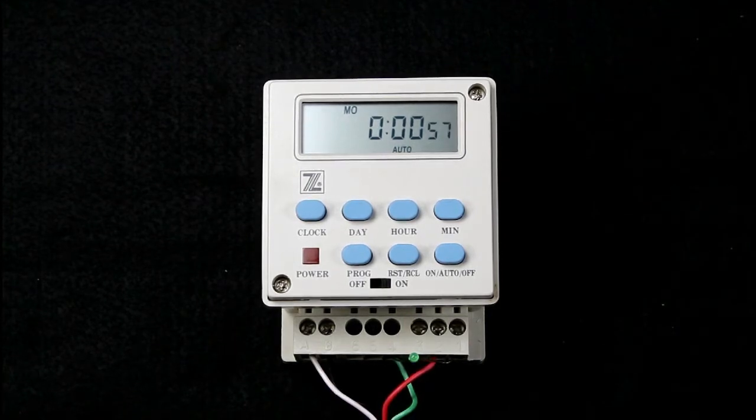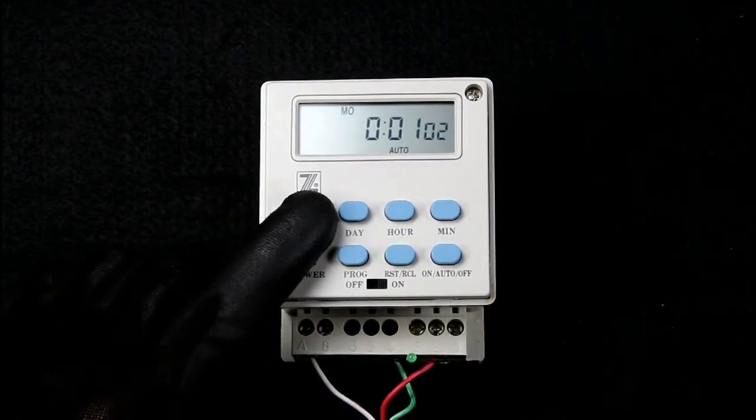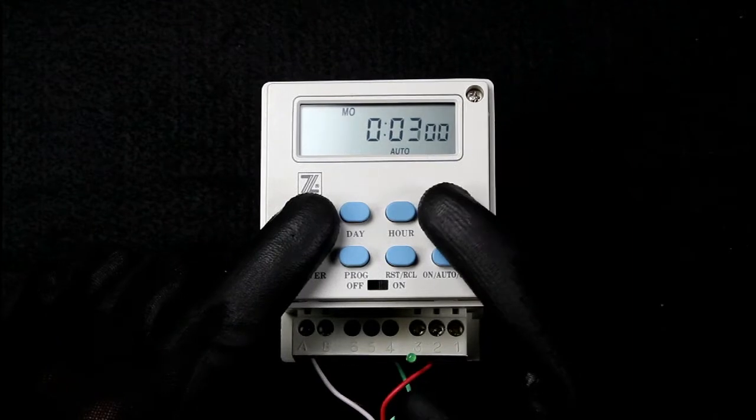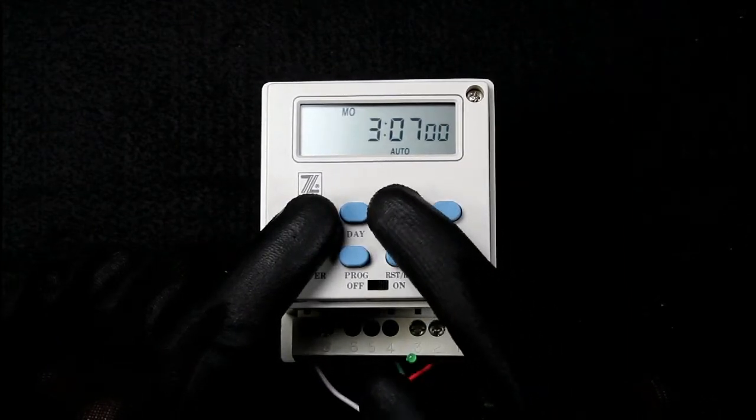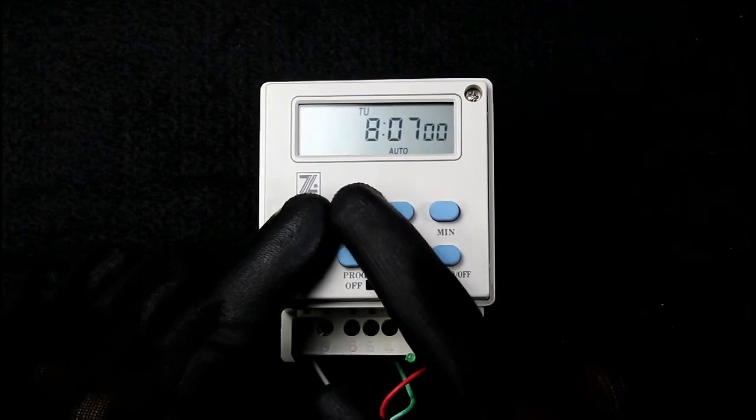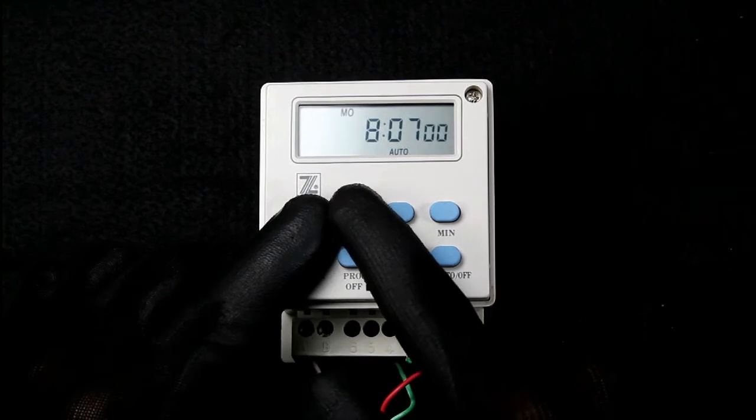First, we'll set the time. This is similar to a clock radio. While holding down the clock button, you press the minute button to advance the minutes, the hour button to advance the hours, and the day button to advance the day of the week. That's how the clock is set.